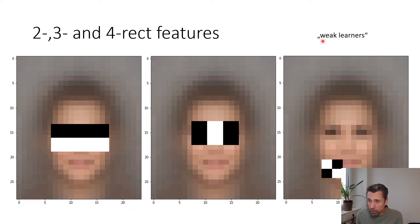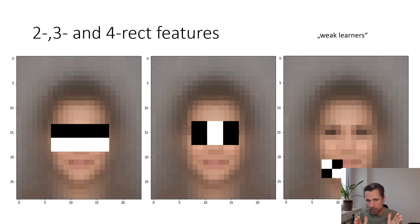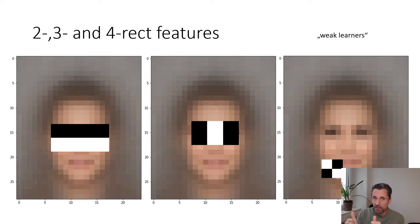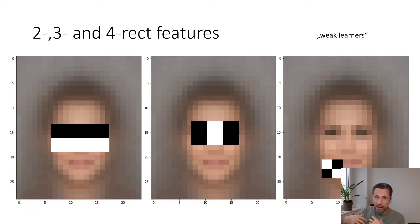We also call these weak learners, because given an input their value may be predictive for the target class, but only slightly better than chance. So we have to combine many of these weak classifiers to create a strong classifier.